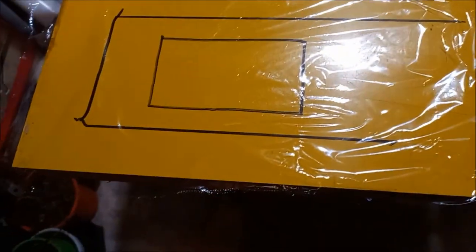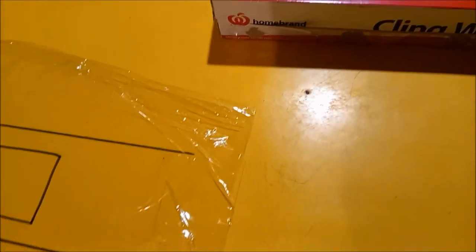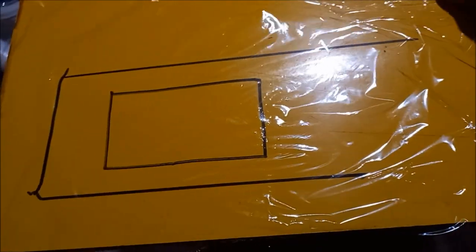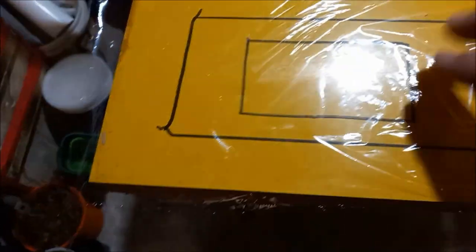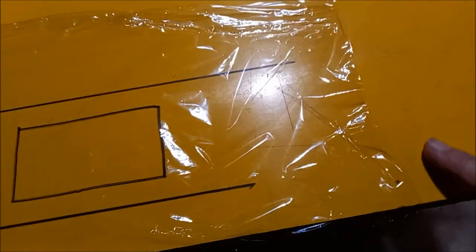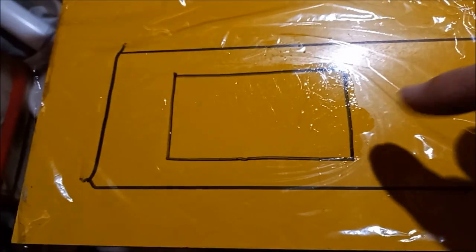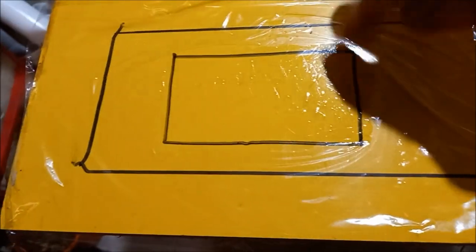We've got some thin glad wrap stuff, so we're going to stick that down so it doesn't stick to the bench. I've just put a little bit of oil in this zone here so that the clear plastic will stick to the bench.